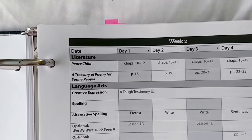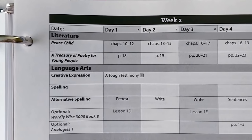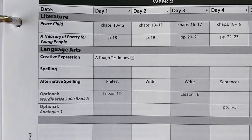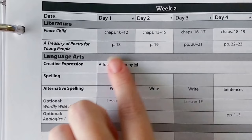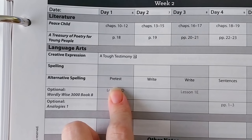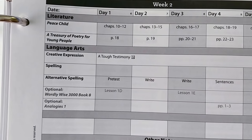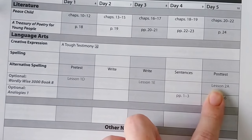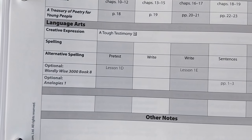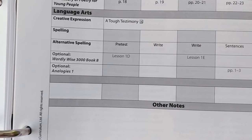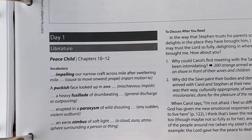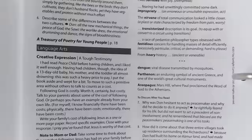In the same week section we've got the literature and language arts. You'll see the same format — he's reading Peace Child, these are the chapters he's reading through the week, and this is the poetry he's reading. Everything is laid out. It gives you alternative spelling words so he can take a pretest, then he writes out his sentences and words through the week, and then takes a post-test at the end of the week. We are not using Wordly Wise because with the amount of vocabulary and spelling words in here, we decided it just wasn't necessary.